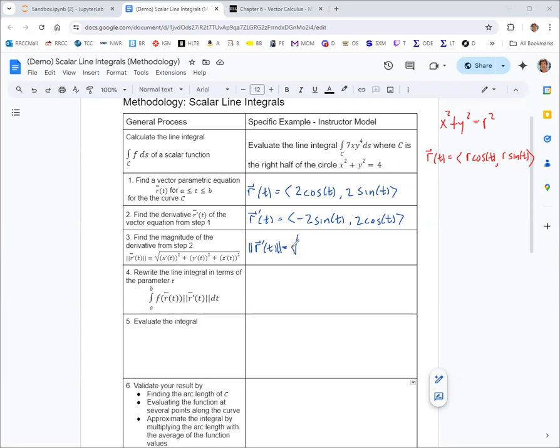Here it's just a plane curve or a function of two variables. So we would take those component functions, negative 2 sine t and 2 cosine t, and square those, add them together, and take the square root. Here you get 4 sine squared plus 4 cosine squared, which is just 4, and square root of 4 is 2.